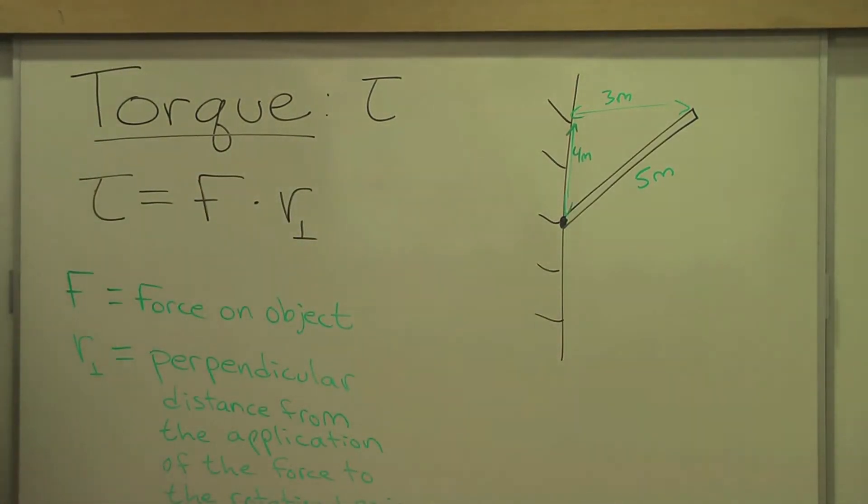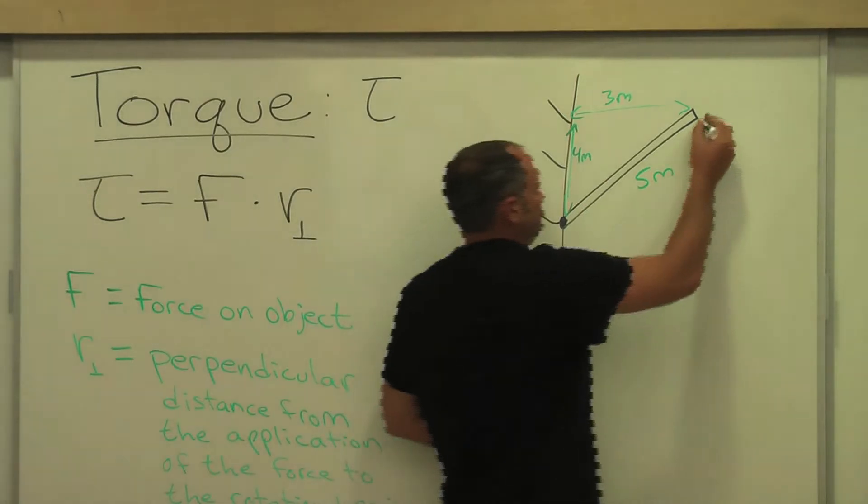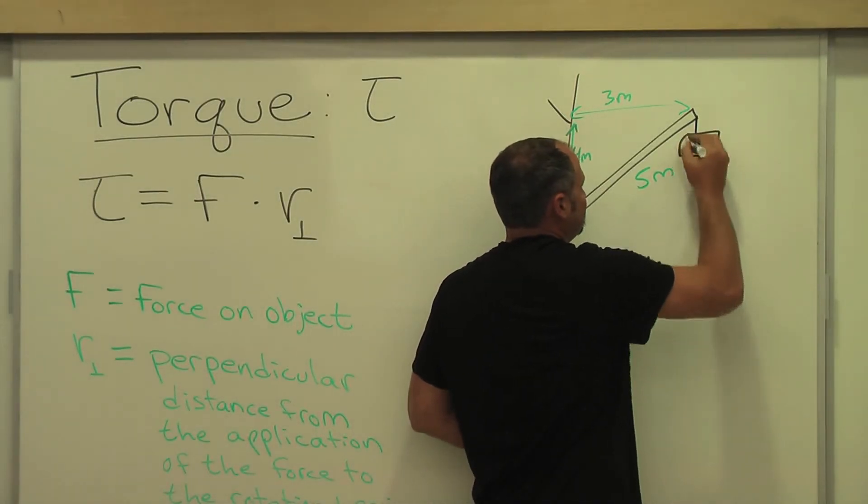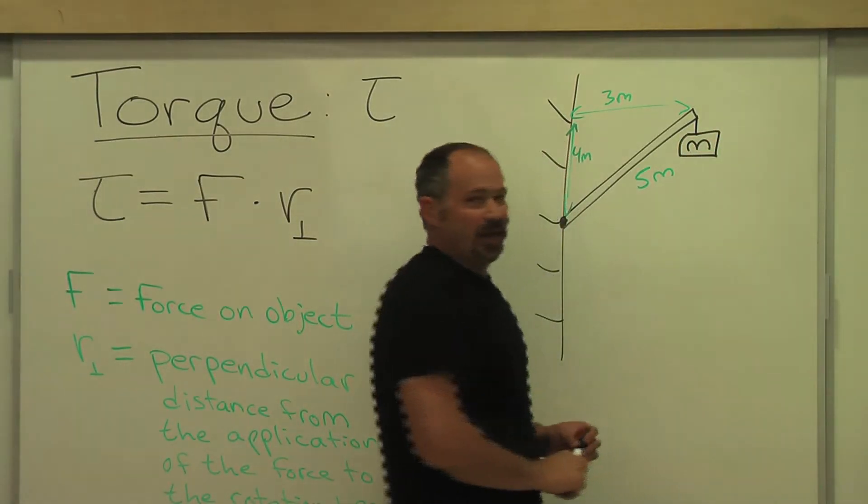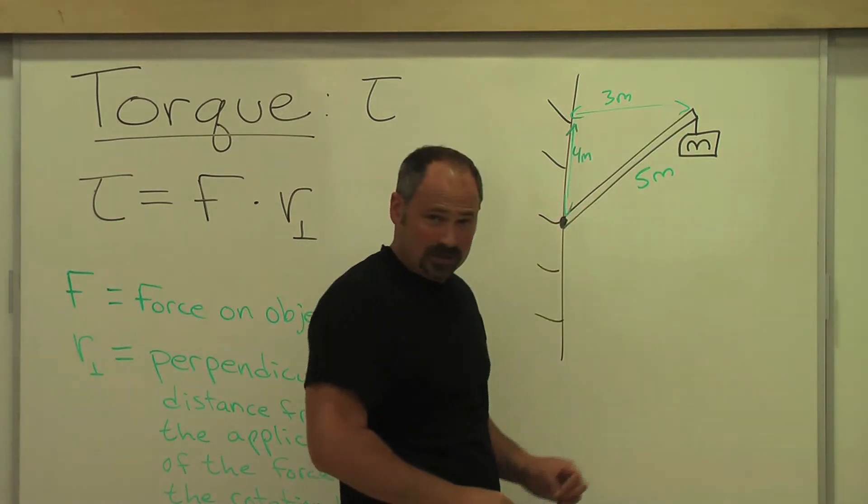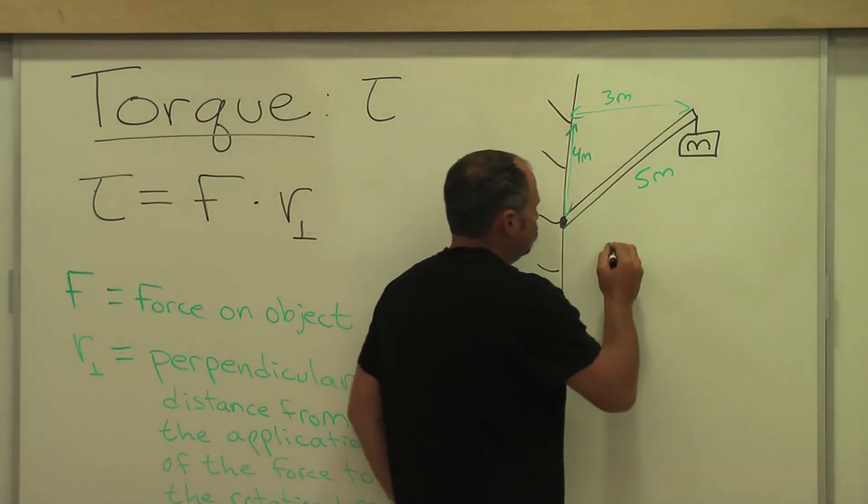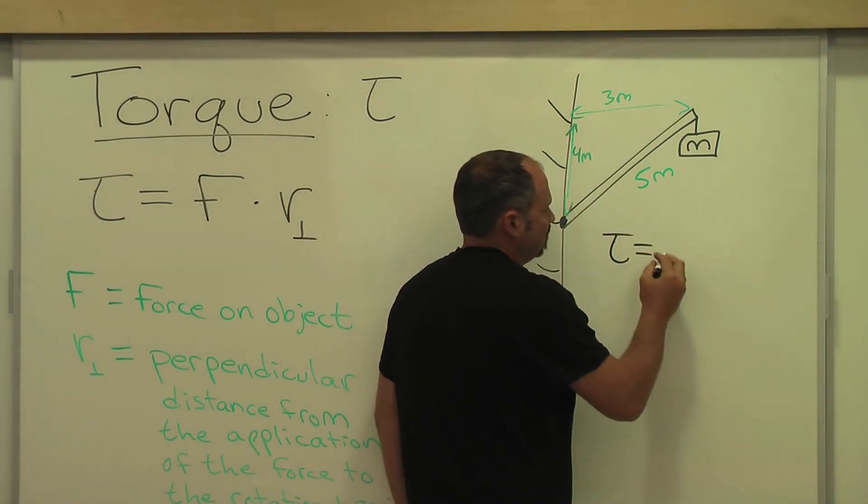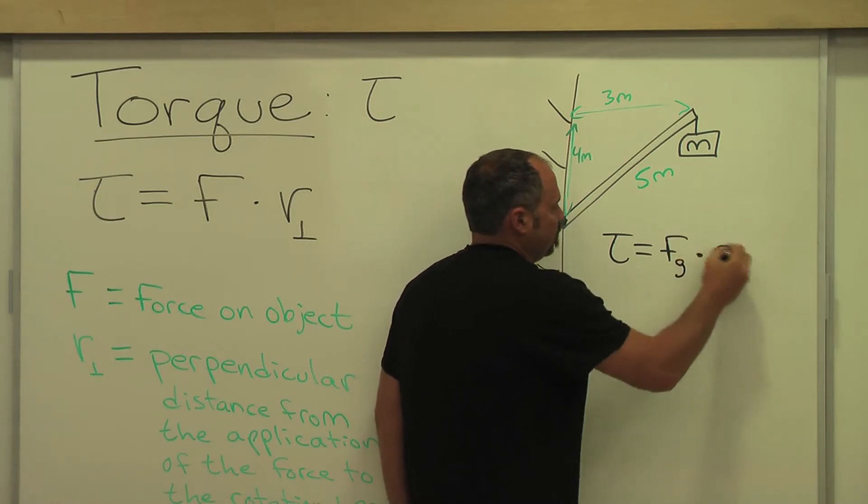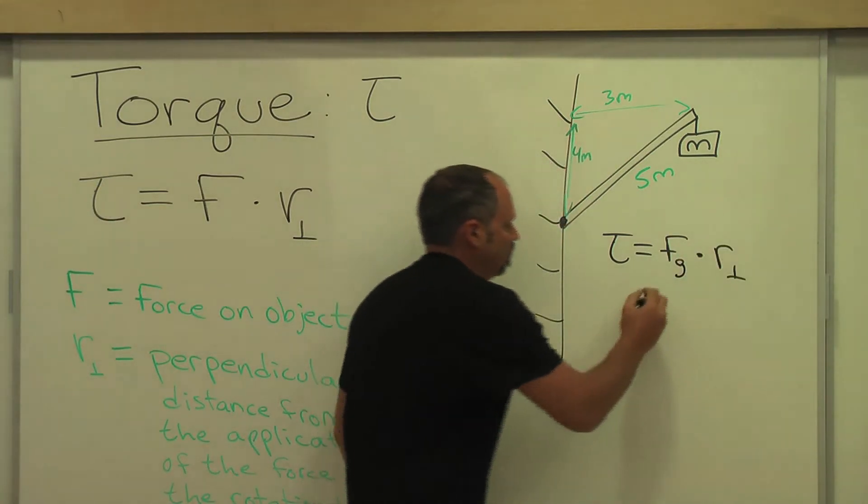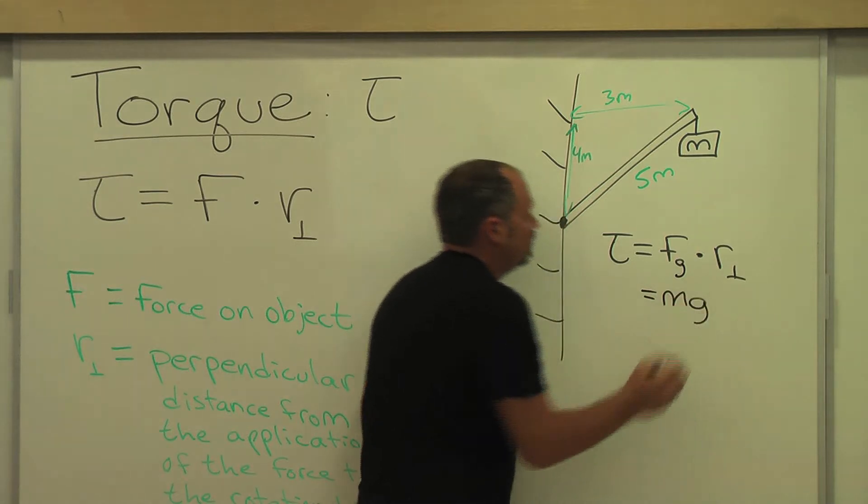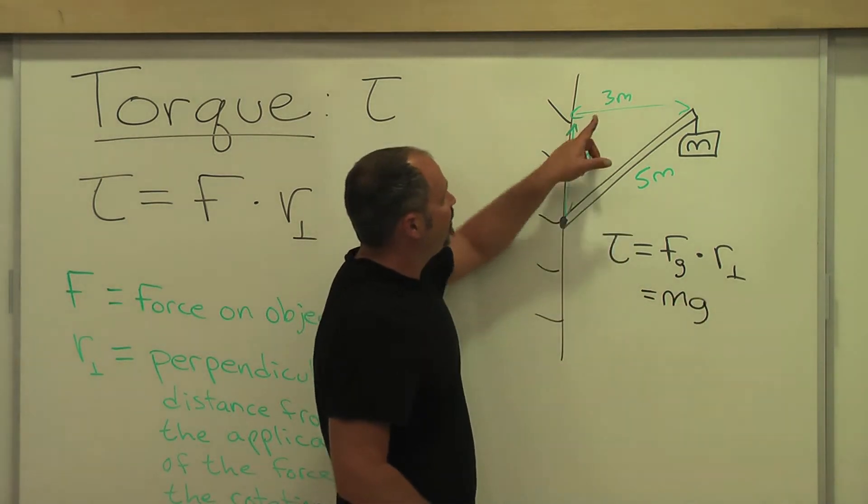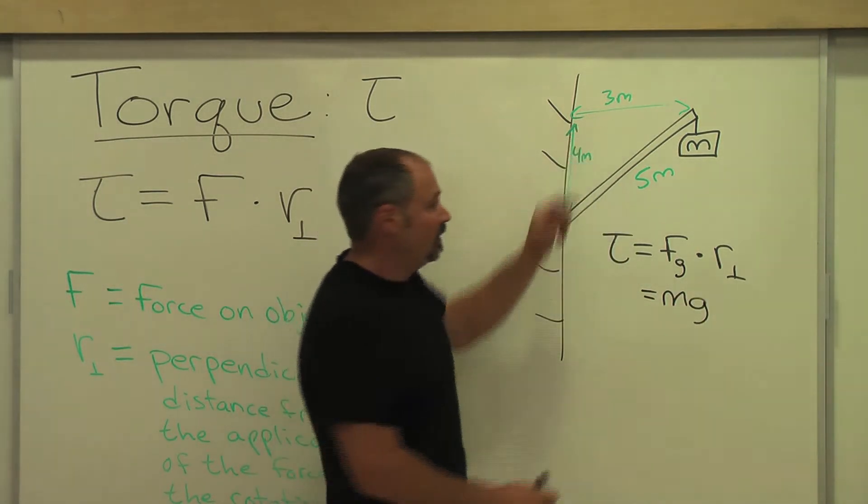Well, if I hang something here with some mass m, and I want to know what's the torque from this mass? Well, the torque from that mass is just the force of gravity times the perpendicular distance. So it's mg multiplied by 3 meters. Not 5,